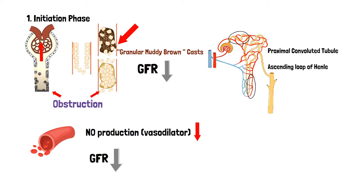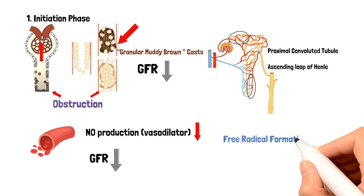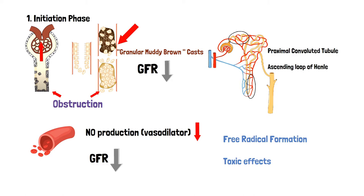If we try to reperfuse a cell which has already been damaged, we can paradoxically cause it more harm through free radical formation, increasing the toxic effects and damaging the cell even more. To sum up, the initiation phase of acute tubular necrosis is a combination of all these effects, and the ultimate result is a decreased GFR.